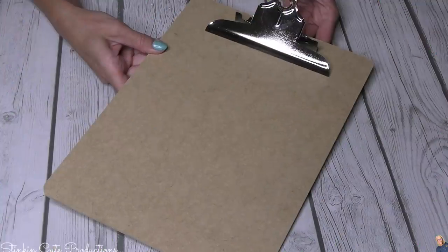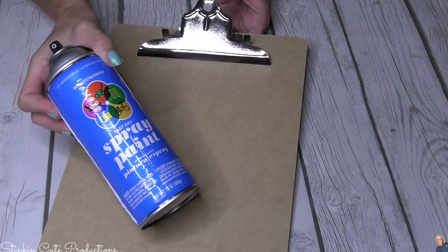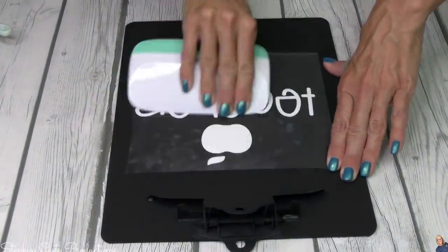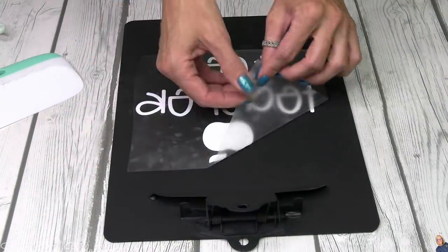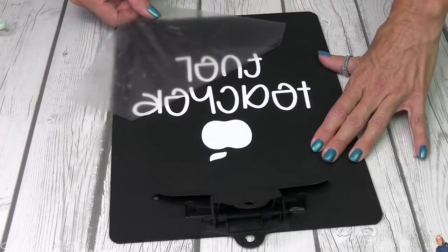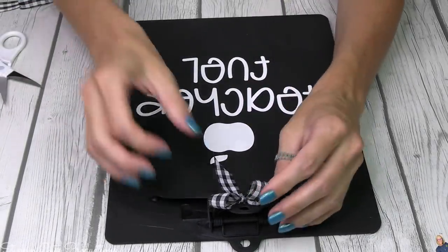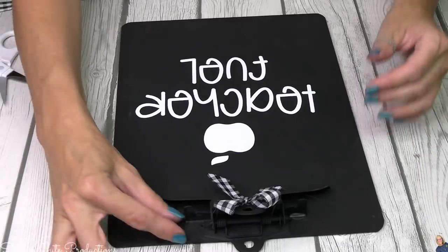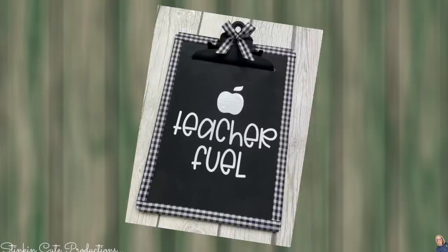Moving on to this super quick and easy DIY number two. It doesn't get any easier than this. All you're gonna need is a clipboard. Dollar Tree has these, Walmart has these. Today I'm gonna spray paint it because you can get a can of spray paint at Walmart for 98 cents. Then I went ahead and went into Cricut Design Space. Under images I searched for teacher and I found this cute teacher fuel with the apple. This clipboard is way too plain on its own so just by adding some gingham to it, maybe a bow on the clip itself and maybe outlining the board itself. I am loving the look of this clipboard. I think it's quick, it's easy, and what a fun gift to give a teacher.